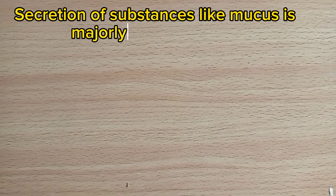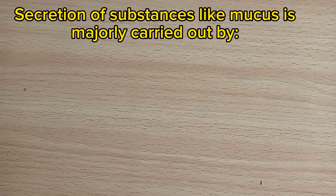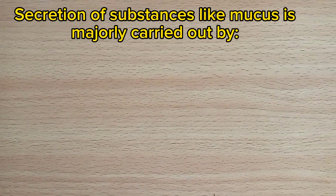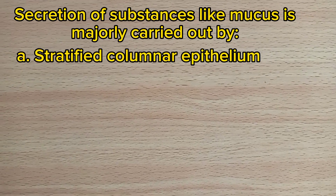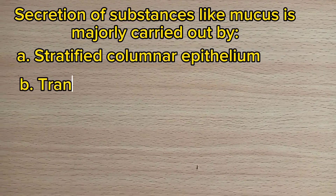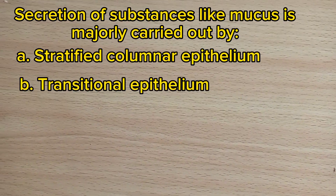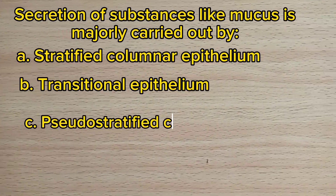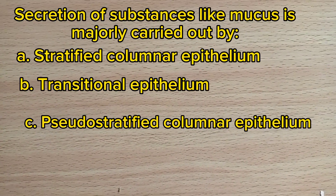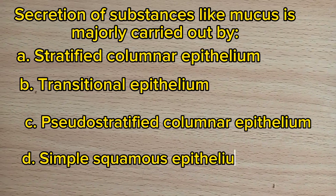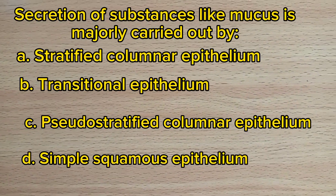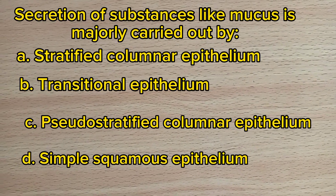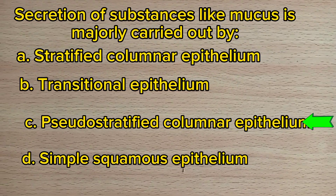Number 15. Secretion of substances like mucus is majorly carried out by: A. Stratified columnar epithelium. B. Transitional epithelium. C. Pseudostratified columnar epithelium. D. Simple squamous epithelium. Answer: C. Pseudostratified columnar epithelium.